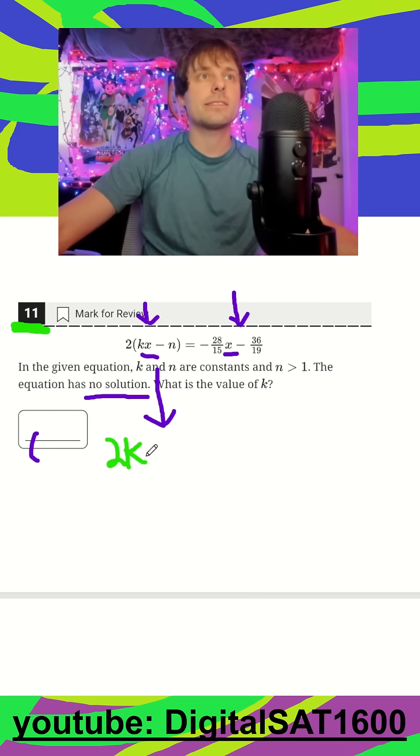So I see 2kx minus 2n, and again, that should be equivalent to this.